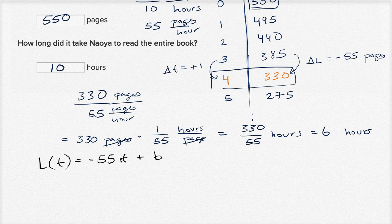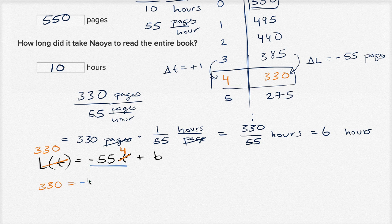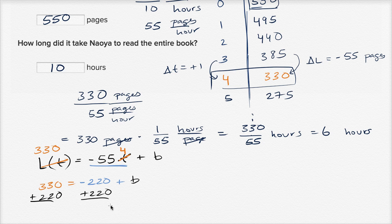We can use the known information to solve for b. We know that when time equals 4 hours, the pages left to read are 330. So 330 = -55 × 4 + b, which gives 330 = -220 + b. Adding 220 to both sides: 550 = b.